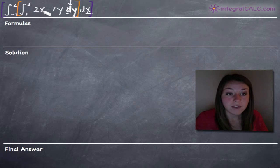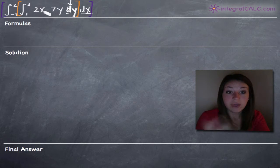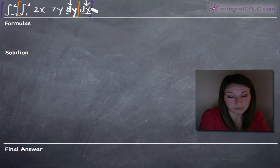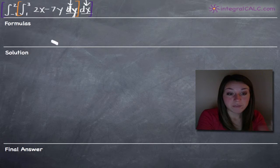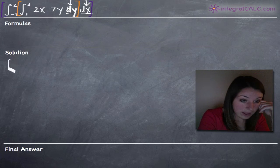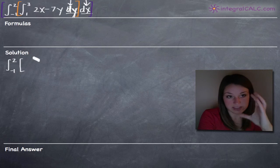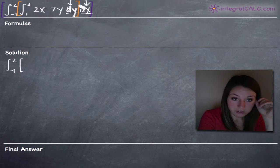Once we take the inner integral with respect to y, evaluate on the range 1 to 3, and simplify, we'll put that result inside the outer integral and take the integral with respect to x. So we'll go ahead and ignore the outer integral for now and draw brackets to indicate we're focusing on the integral with respect to y.